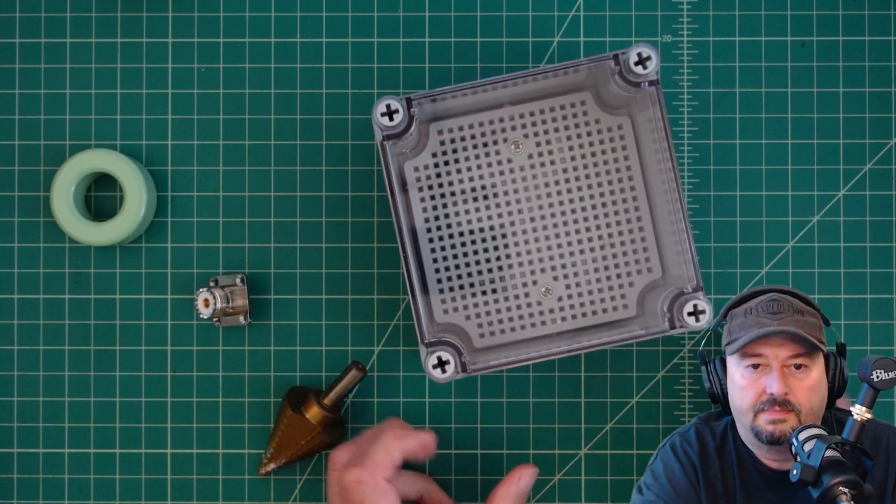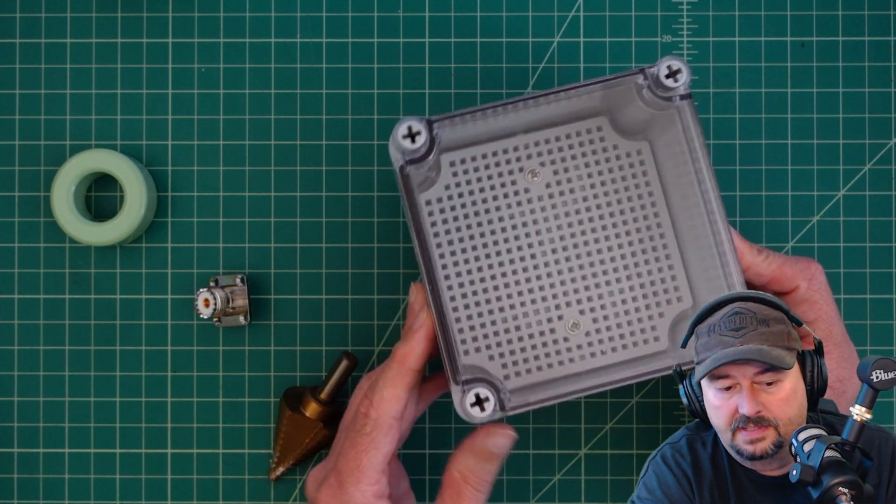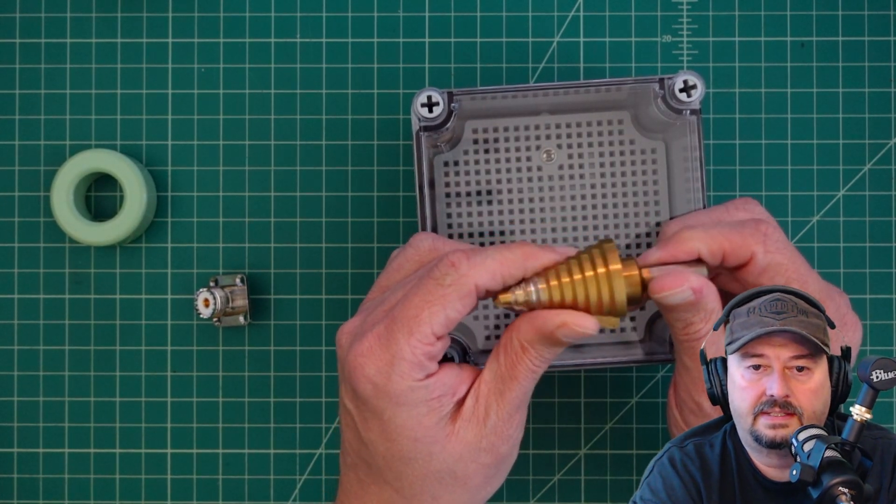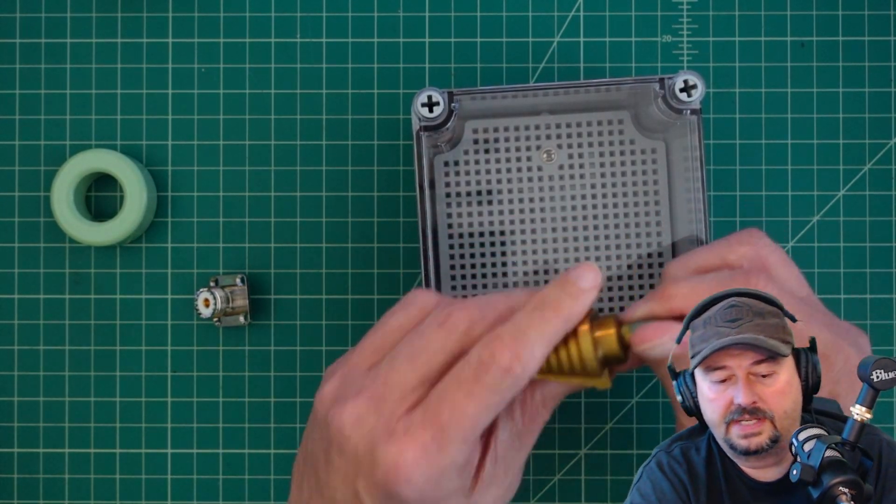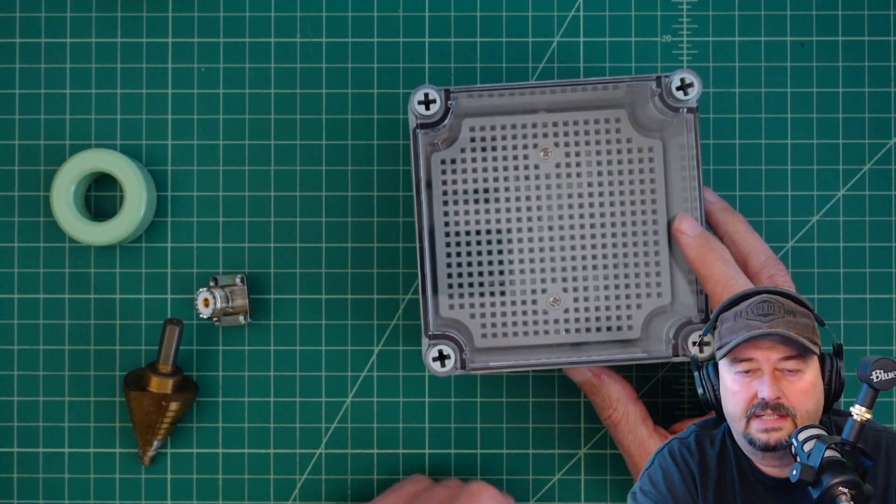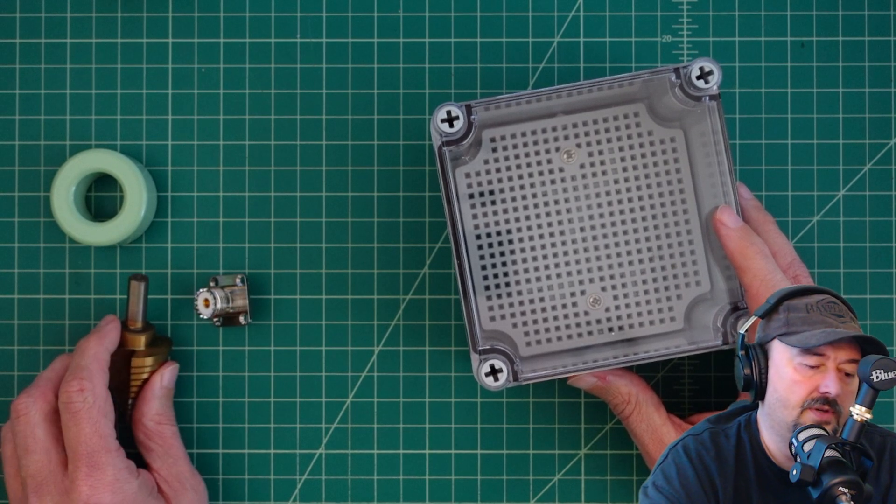Here's the box that we're going to use and I'm going to have a link to this box below if you want to play along. This is a step drill bit and it's what I use to drill holes in this box. Typically I'll use a regular drill bit to do a pilot hole and then if necessary I'll use this step drill bit.